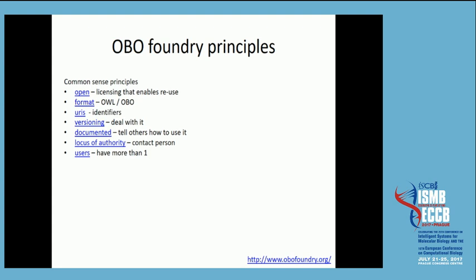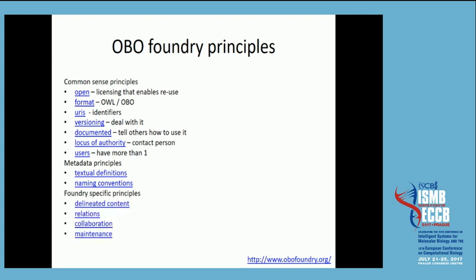Those things I think everybody would agree on. Then there's metadata principles about there should be textual definitions — and that's probably where the disagreement starts. Then naming conventions, which I'll talk about — I think there's also some agreement that there are better or worse ways to name things. And then there are Foundry-specific principles, such as delineated content in different ontologies, which is truly problematic in many cases, requiring a lot of commitment and using the same relationships across ontologies.